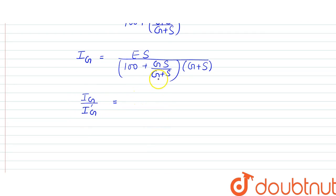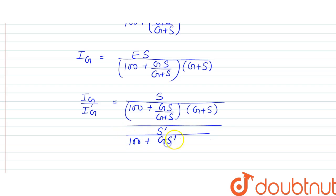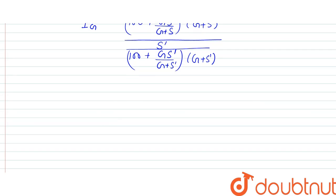E cancels, S by (100 + GS/(G+S)) times (G+S) whole divided by S' by (100 + GS'/(G+S')) times (G+S'). So this would be the equation that we get, which is equal to 3 by 10.